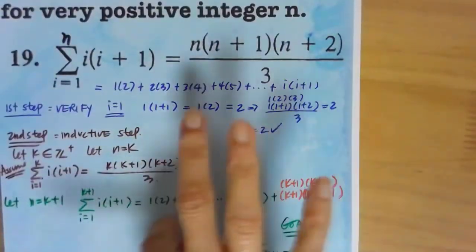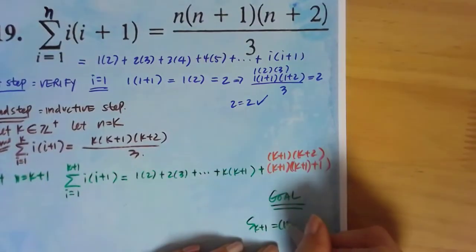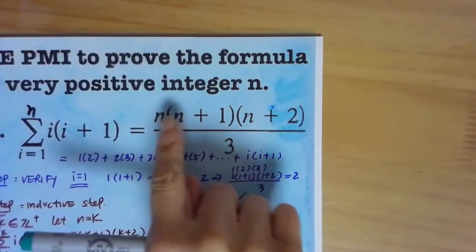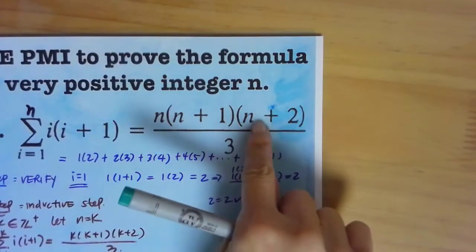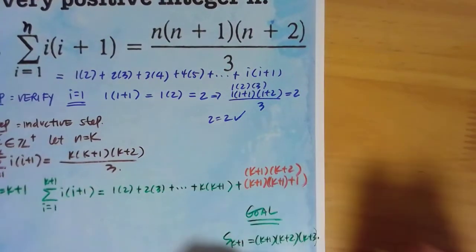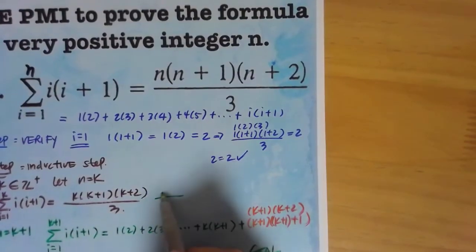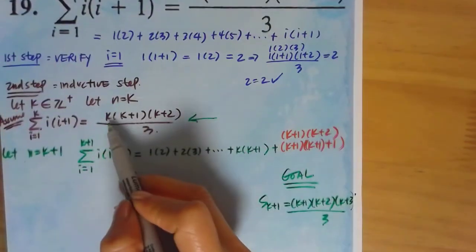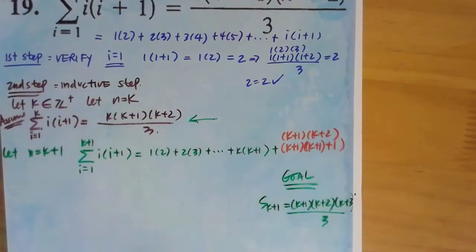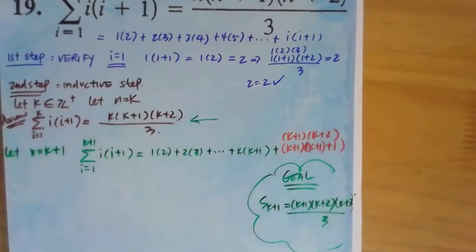We're trying to prove using the left-hand side here that this is true for k plus 1. That means it's going to be k plus 1, k plus 2 because we're going k plus 1, k plus 1 plus 1, k plus 1 plus 2. So it's going to be k plus 3 all over 3. That's our goal, all over 3 because we're simply taking this guy here. This is our goal. We're going to achieve this using this here.